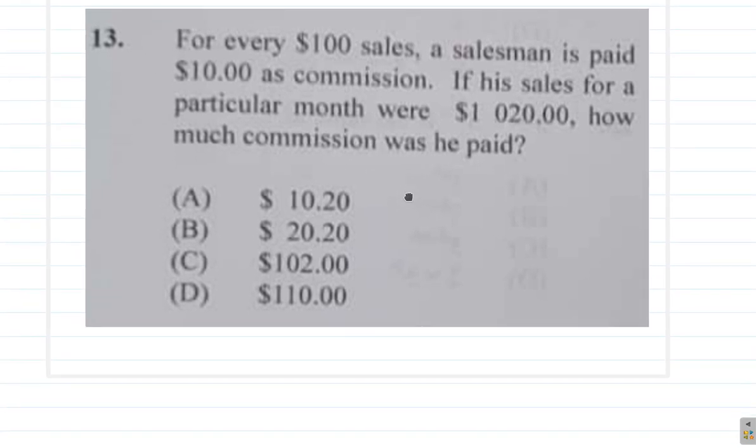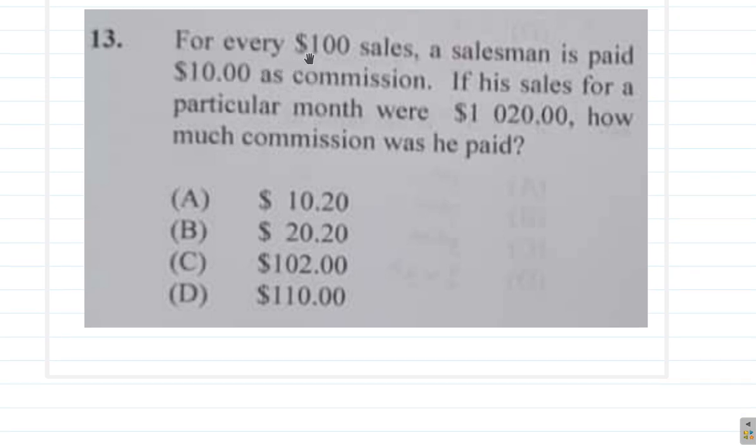So every $100 sale, he's paid $10 as commission. That means 10%, 10 out of a hundred, 10% commission. Alright, you see for a particular month or $1,020, how much commission was he paid?